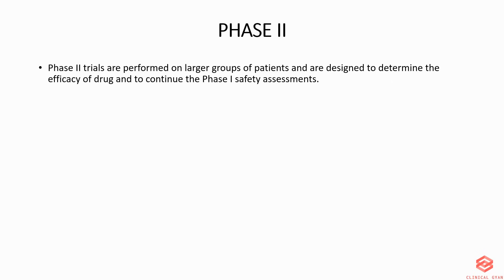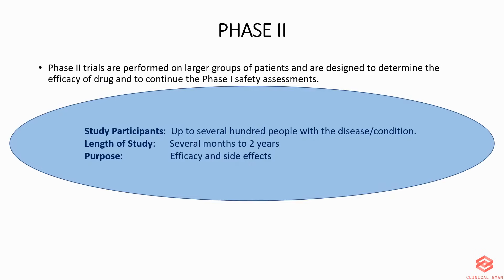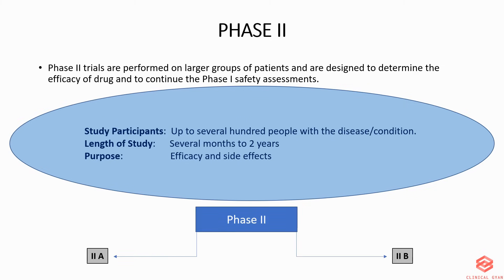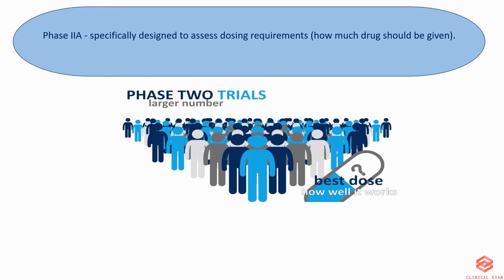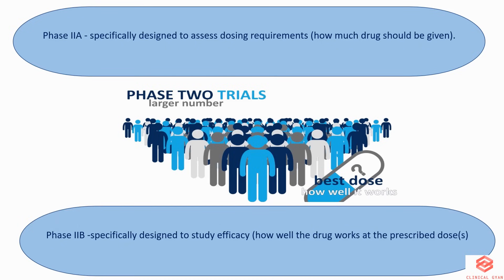Phase 2 trials are performed on a larger group of patients and are designed to determine the efficacy of the drug and to continue the Phase 1 safety assessments. Study participants are up to several hundred people with the disease or condition. The length of the study is up to several months to two years, and the purpose is to determine efficacy and side effects. Phase 2 is divided into Phase 2a, specifically designed to assess dosing requirements, and Phase 2b, specifically designed to study efficacy — how well the drug works at the prescribed dose.